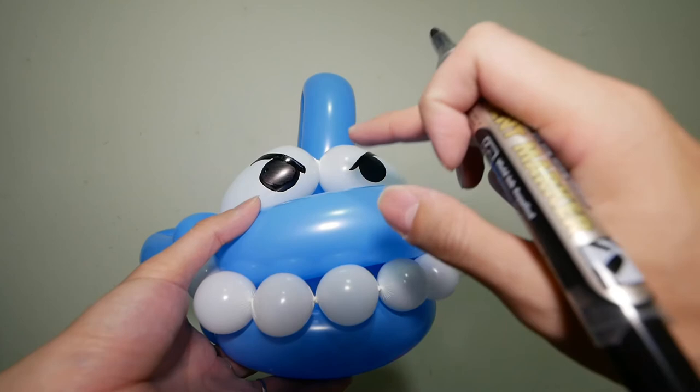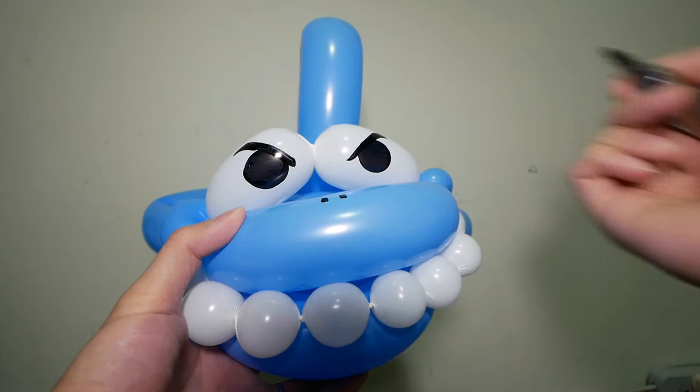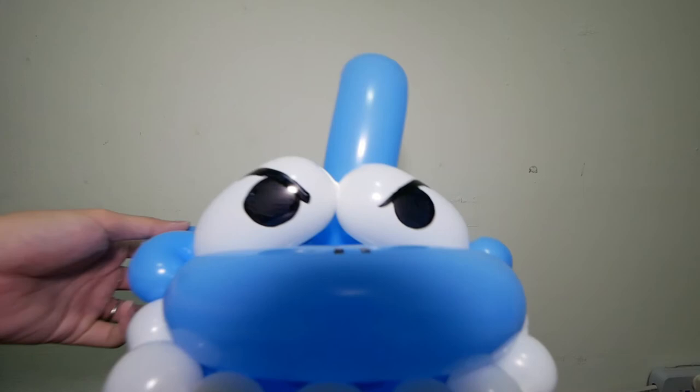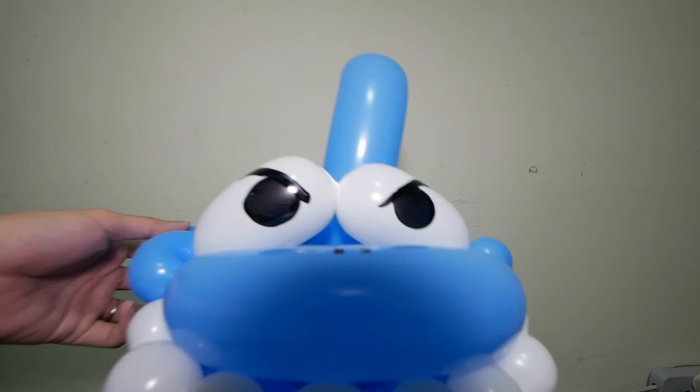You can thicken the ends over here. Last thing to draw is the nose, so very simple, just two dots. One dot, two dots like this. So there we have it, a simple balloon shark.